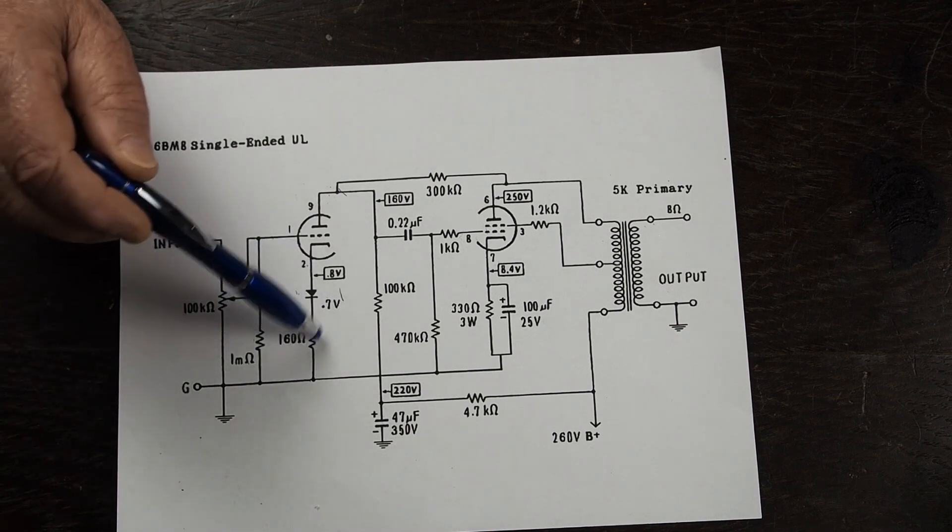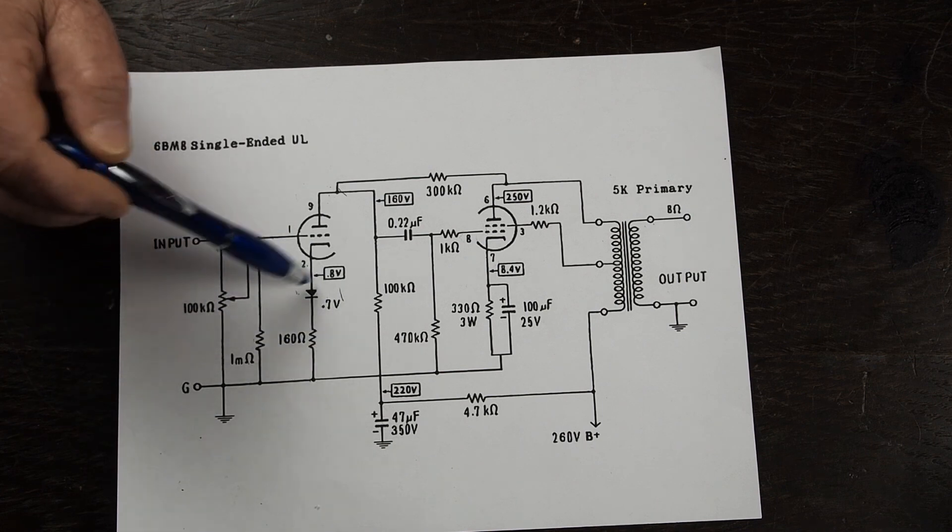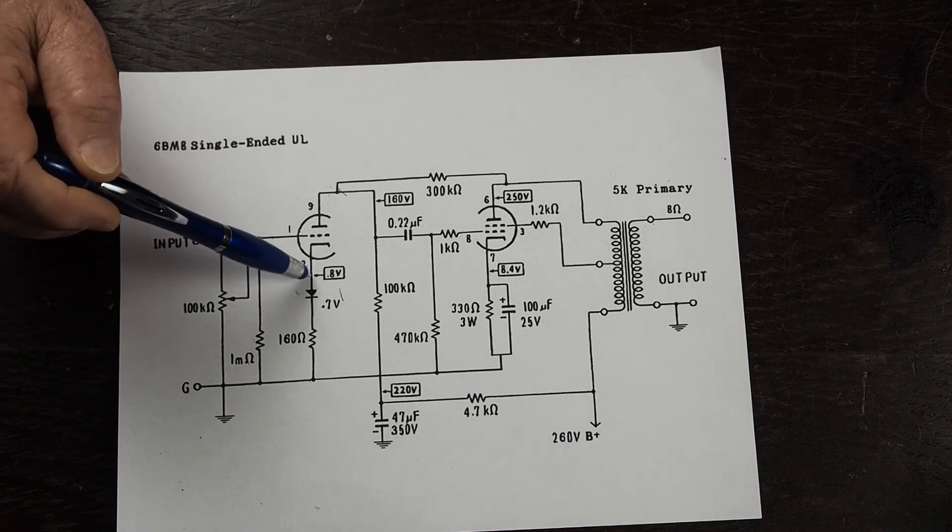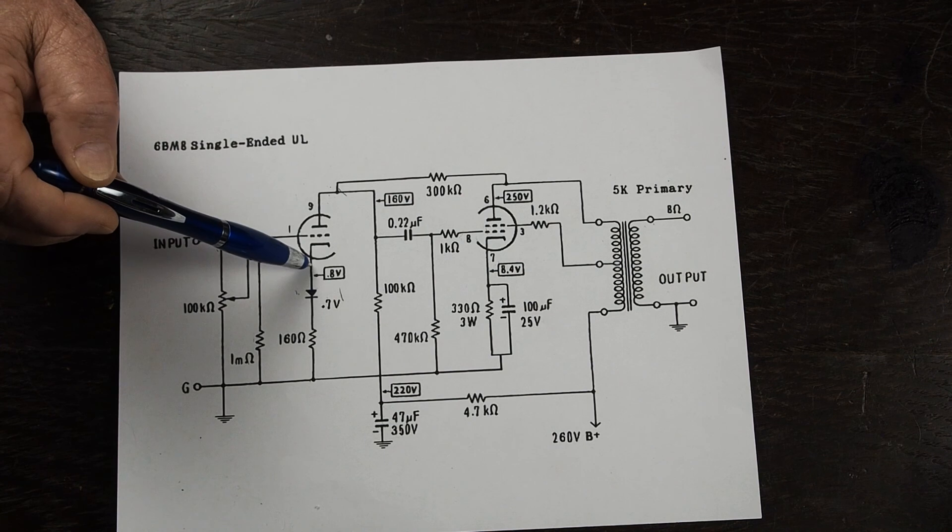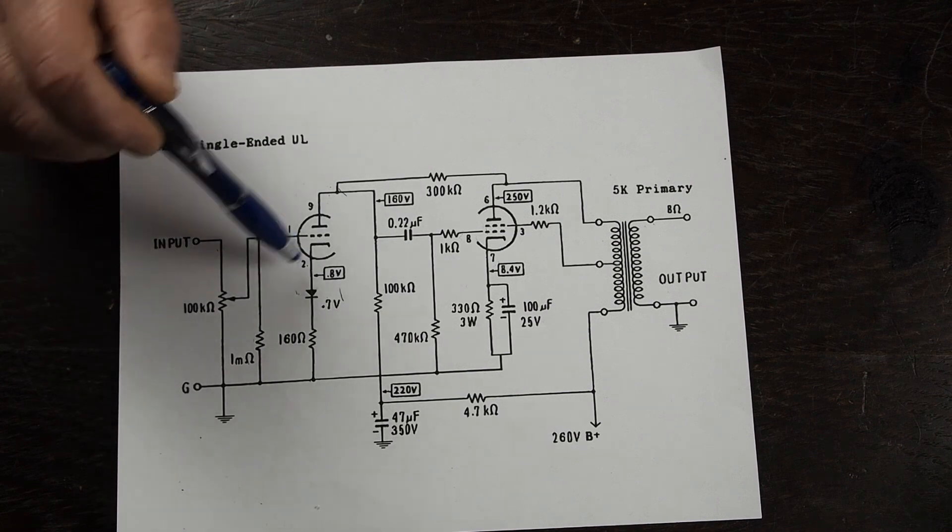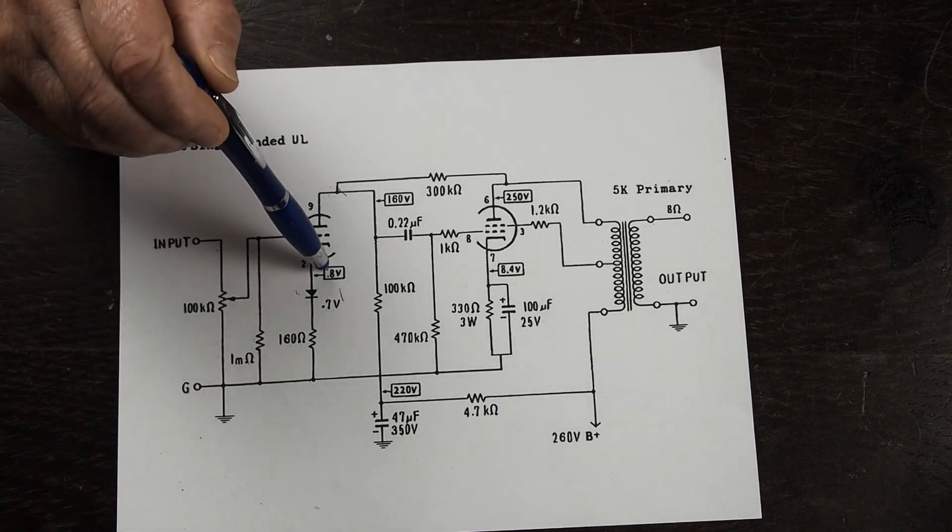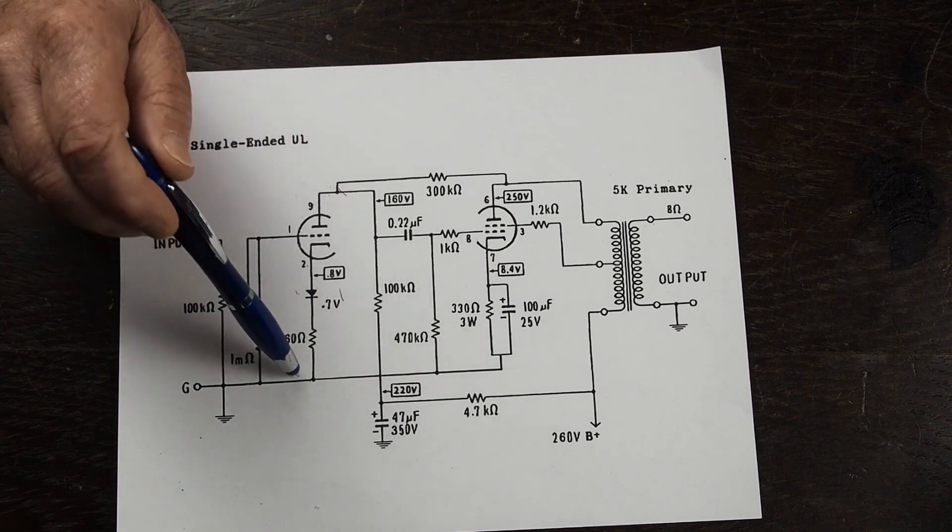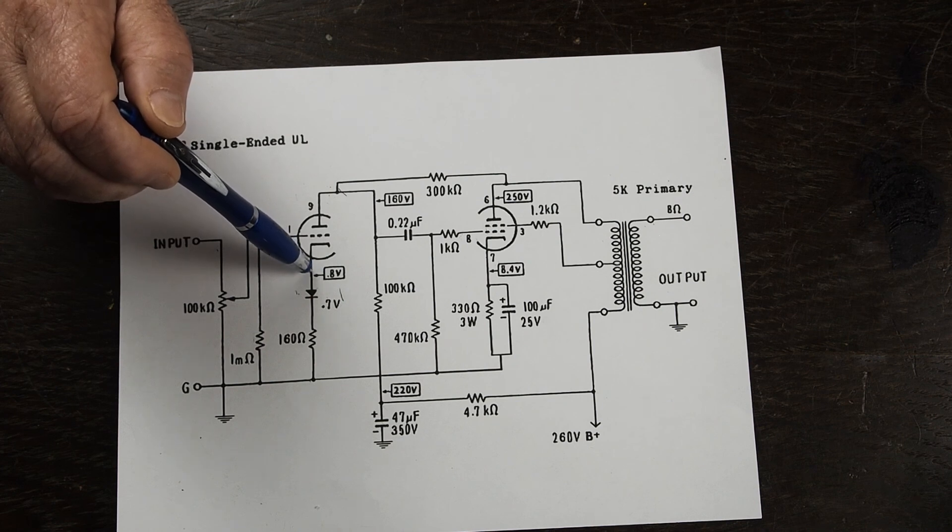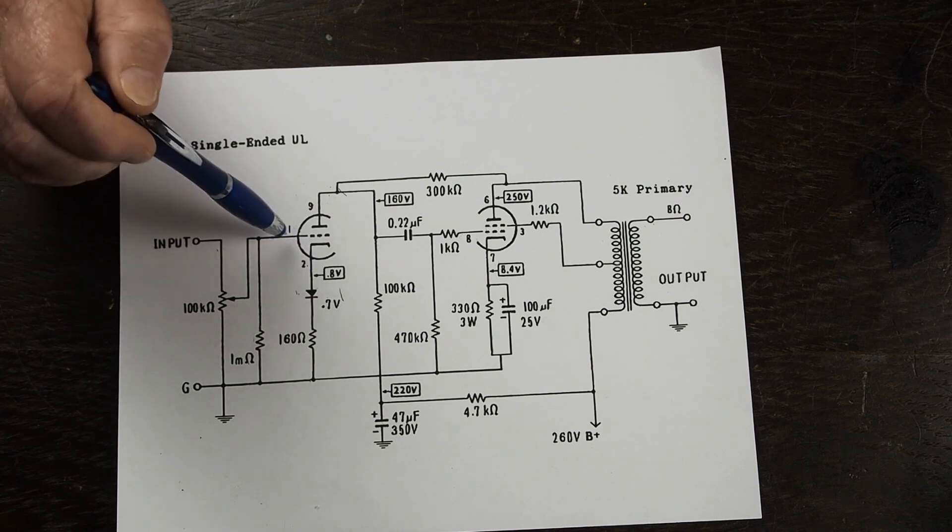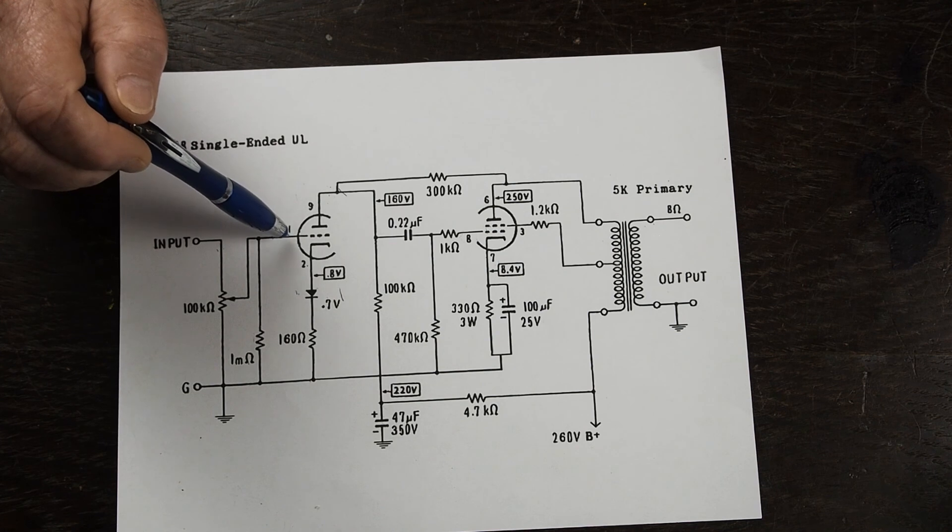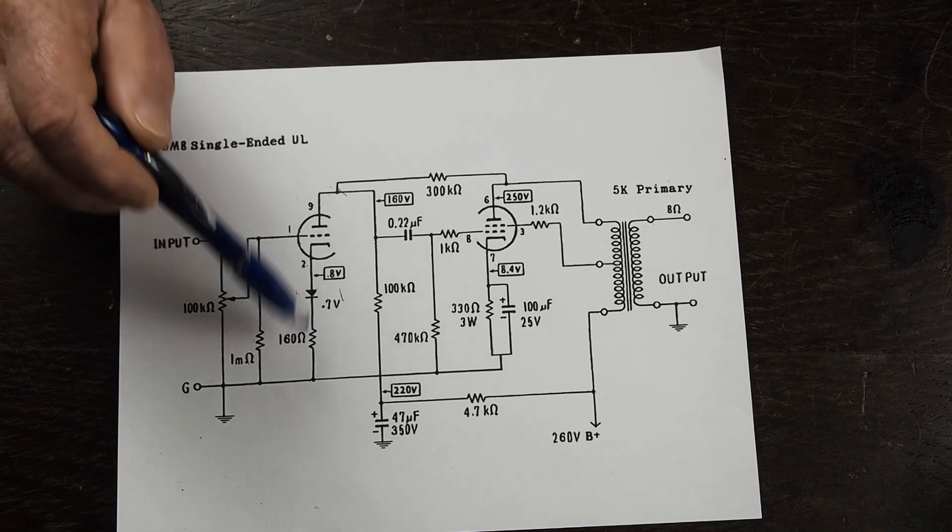On the cathode of this tube, the original design had a 1k resistor from the cathode to ground and what this does is this resistance creates a positive voltage at the cathode in relation to ground. So when you go across from here to the grid there will be a negative voltage on the grid of 0.8 volts in this instance which is how you bias the tube. This is called a cathode bias.